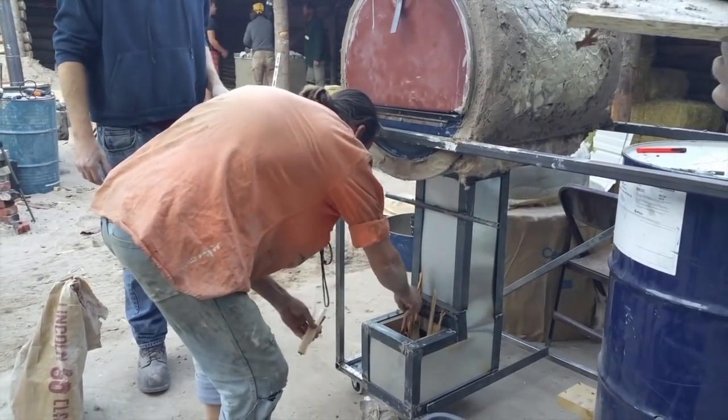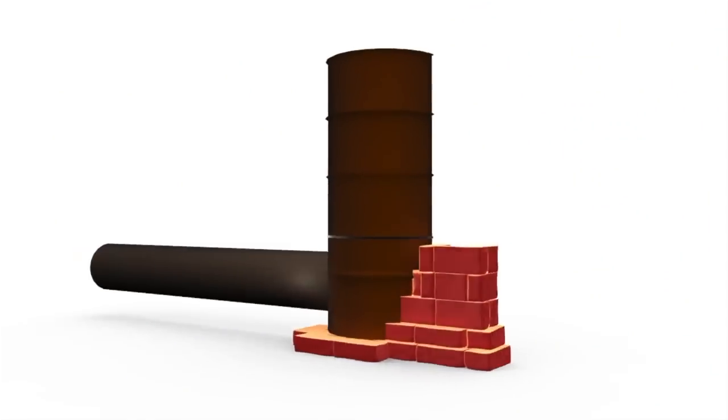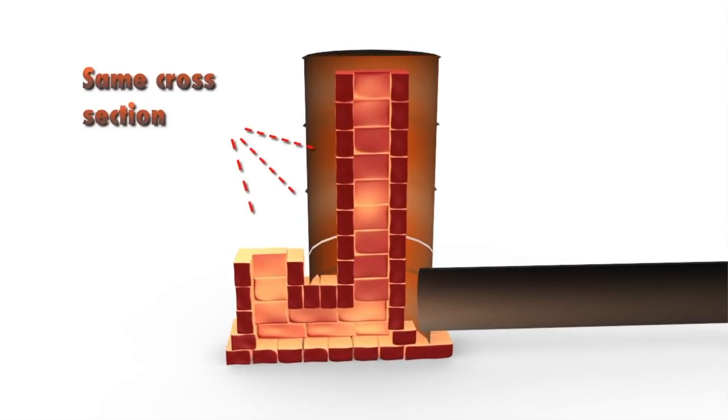The core of the rocket oven is the same as the core of a J-tube style rocket mass heater. A super insulated wood feed, burn tunnel, and heat riser.